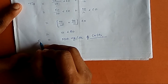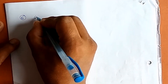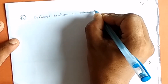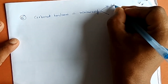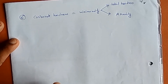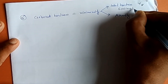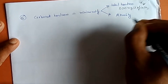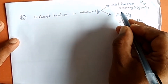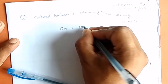Having solved total hardness, we move to topic two: carbonate hardness. Carbonate hardness is always the minimum of total hardness and alkalinity. The total hardness calculated was 500 mg per litre of CaCO₃ and alkalinity is 270 mg per litre. The minimum of the two is alkalinity, so carbonate hardness equals 270 mg per litre.